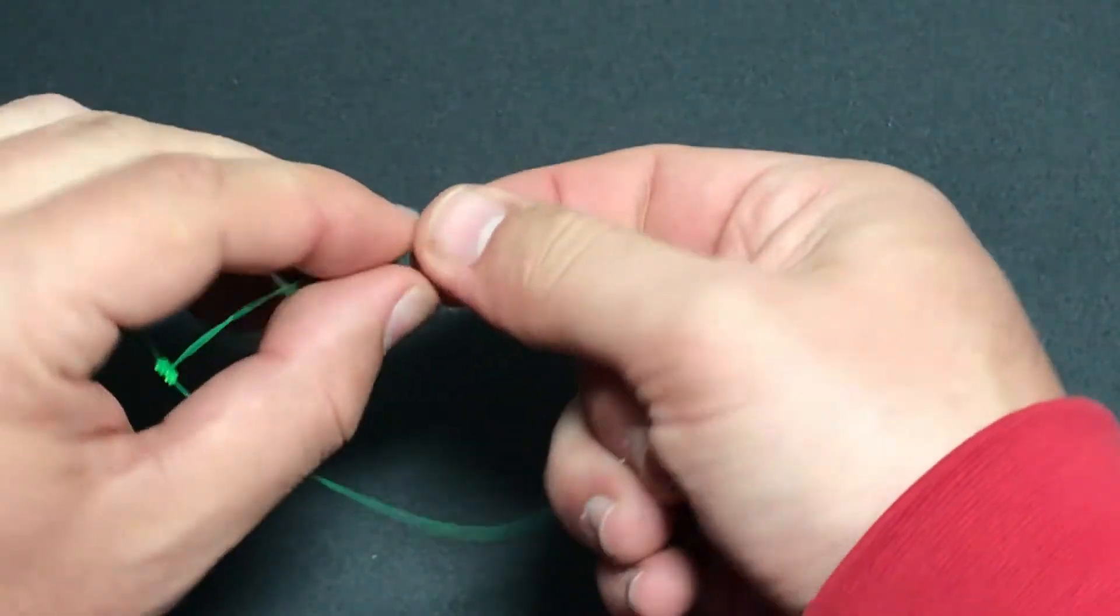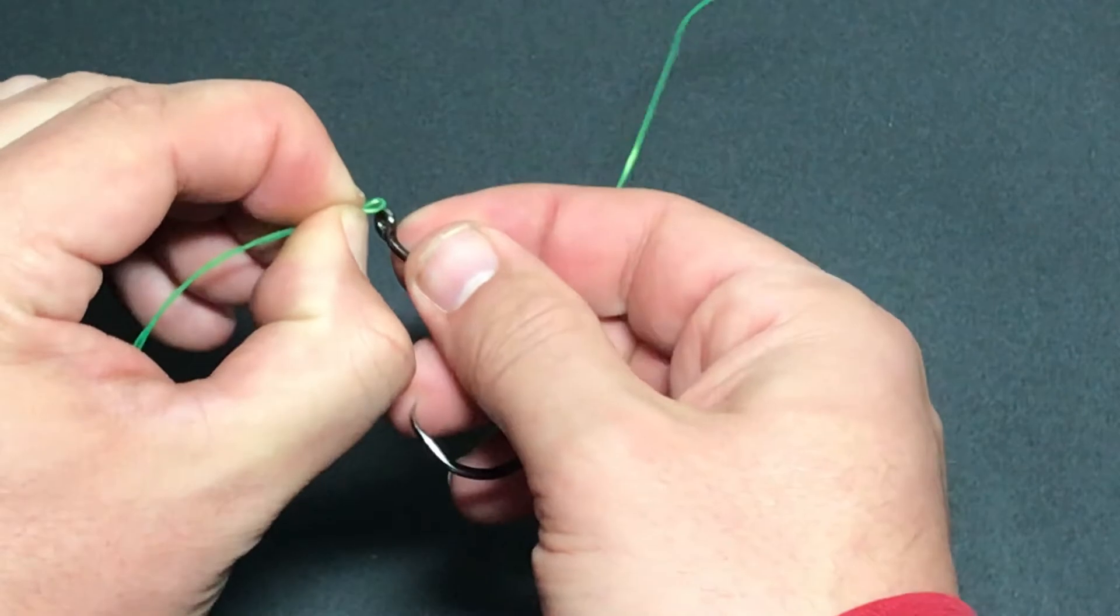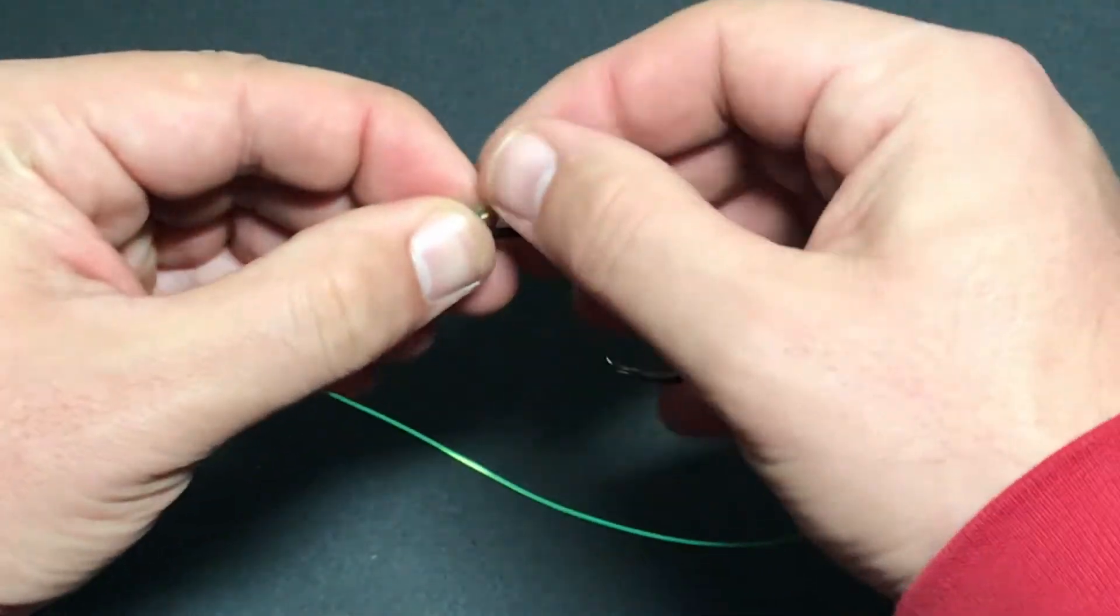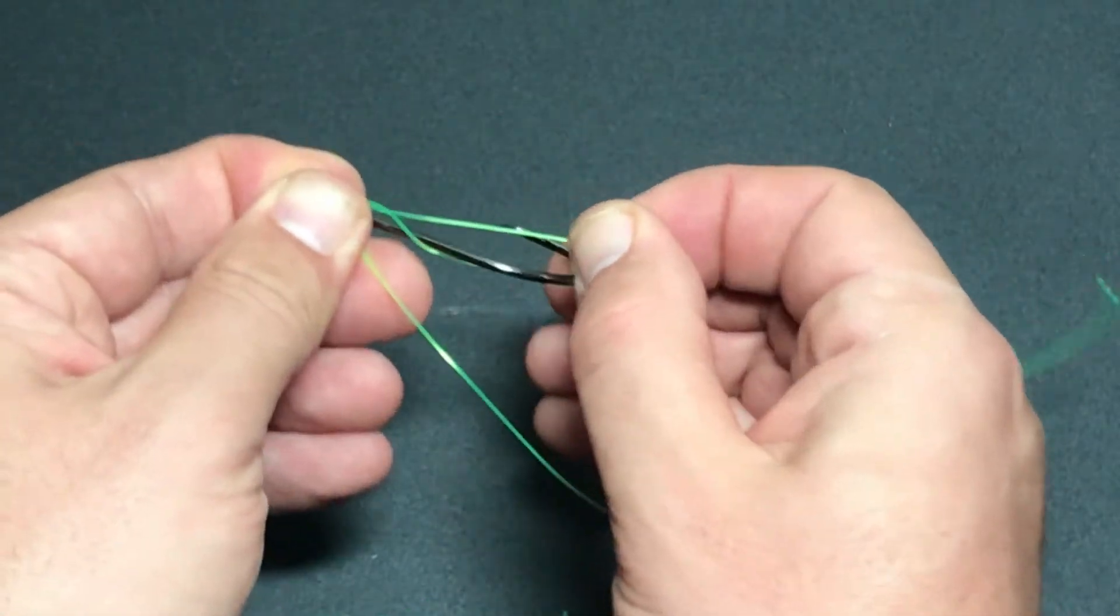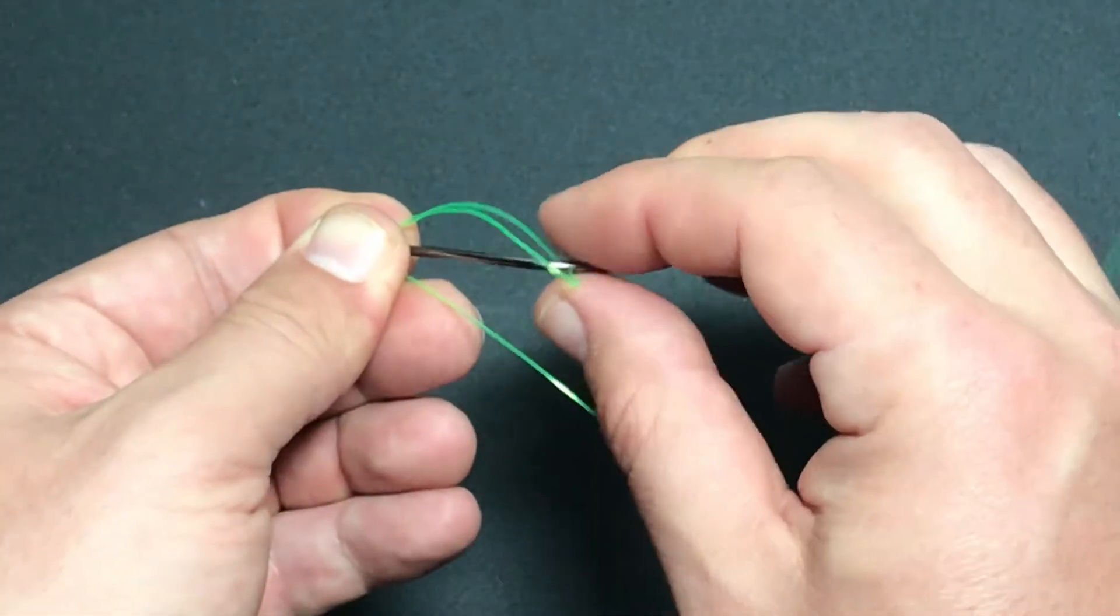We're going to take our hook, we're going to thread it through the eye, run it all the way down to the knot, and then we're going to wrap that loop around the hook.